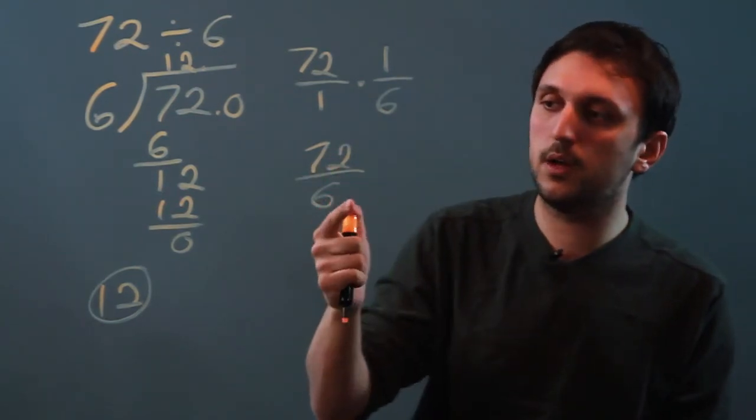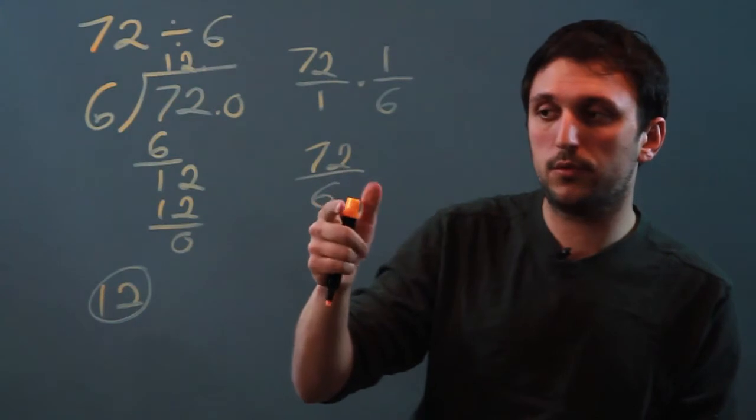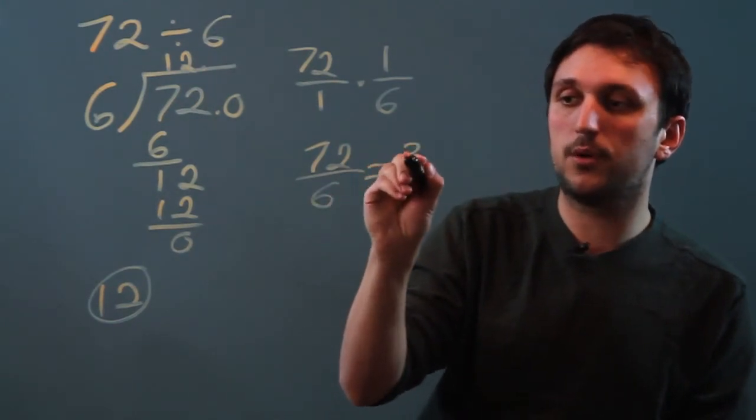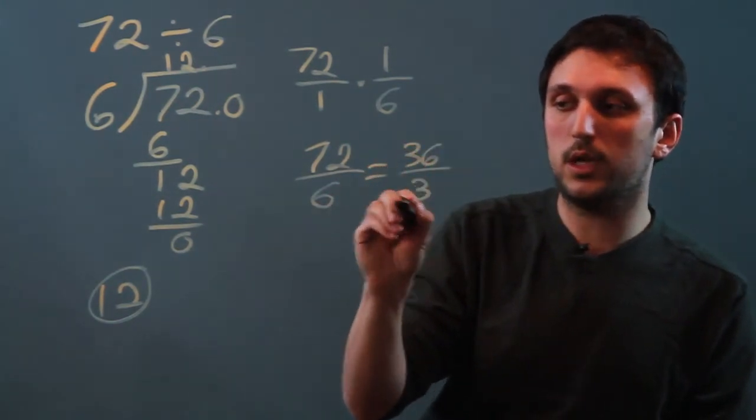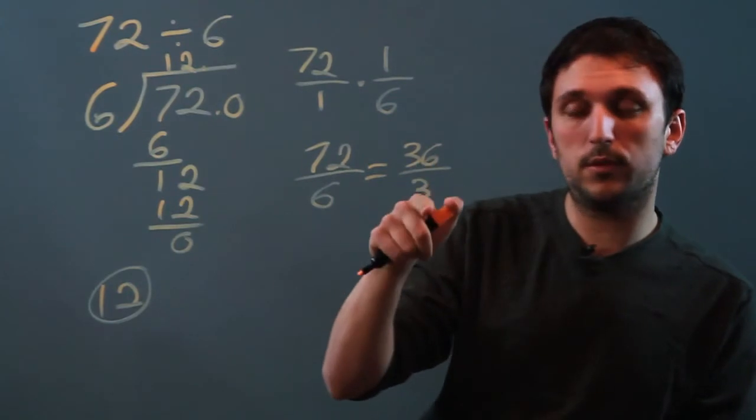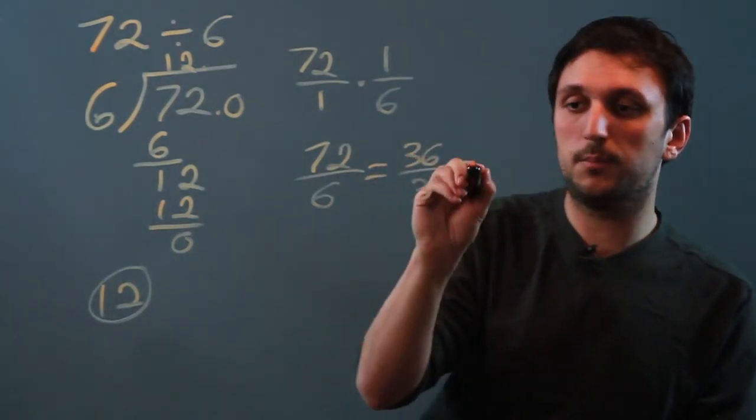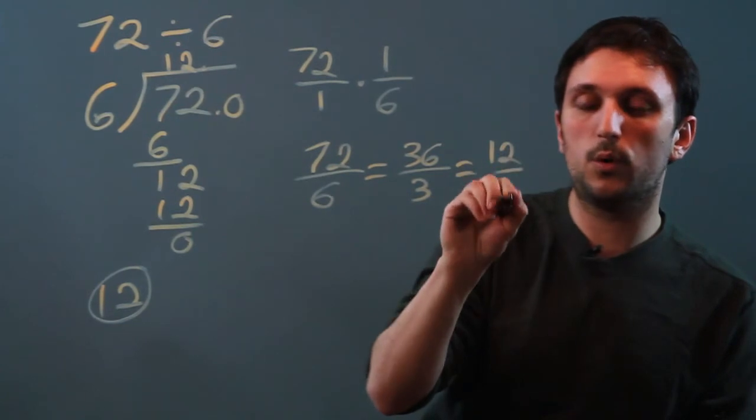And we can look at this and say, well, they're both divisible by 2. So we can simplify it to 36 over 3. And then we look at these two and say, well, they're both divisible by 3. So that's going to be 12 over 1.